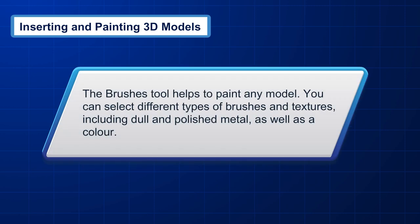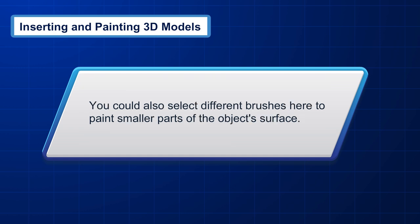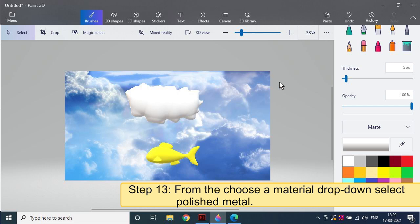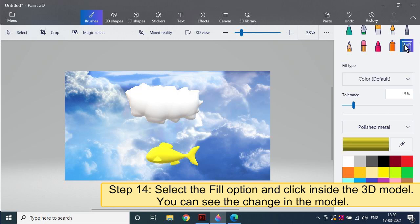The Brushes tool helps to paint any model. You can select different types of brushes and textures, including dull and polished metal, as well as color. For example, to give your model a polished golden look, select Polished Metal and a yellow color, then click the Paint Bucket icon and click the model once to paint its entire surface. You can also select different brushes to paint smaller parts of the object's surface. Step 12 – select the Brushes tool. Step 13 – from the Choose Material drop-down, select Polished Metal. Step 14 – select the Fill option and click inside the 3D model to see the change.